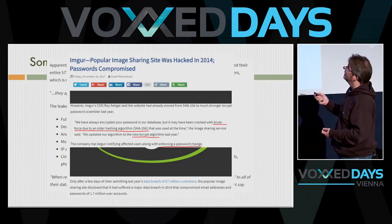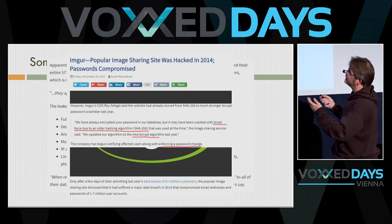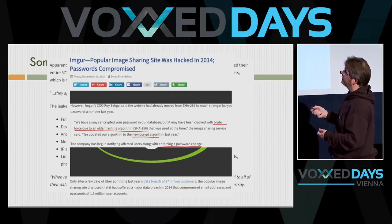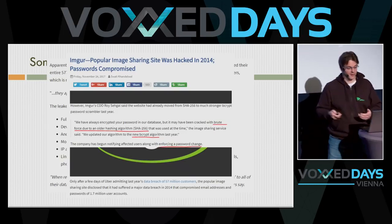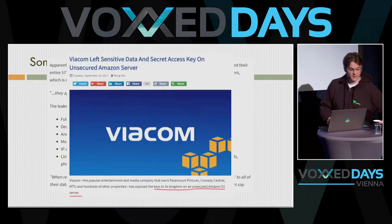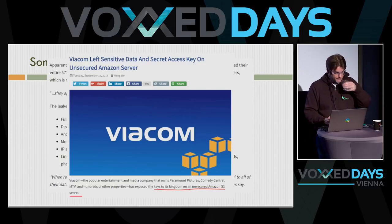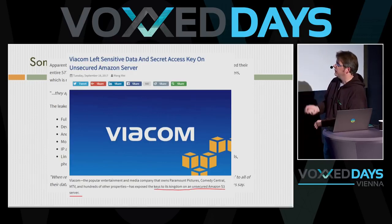Another example was a brute force attack where a password database was leaked. The issue was that an older hashing algorithm was used. Interestingly, they had moved to bcrypt that year, but this particular one was not used correctly, so hackers were able to reverse those passwords instantly.